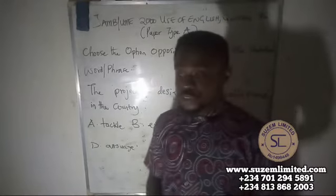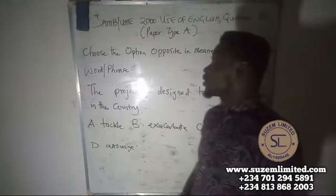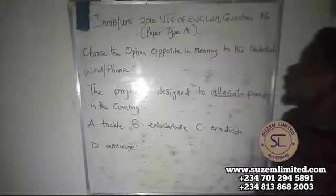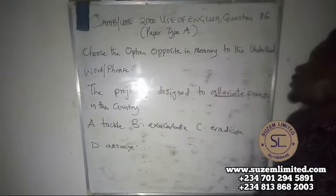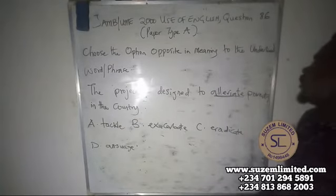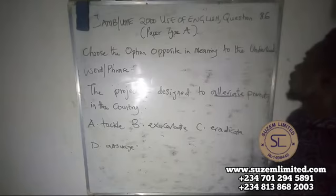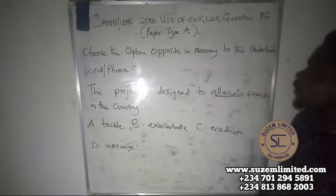You are welcome to SUSEM Academy. Today we are going to take a look at JAMB/UME 2000 Years of English, question 86, paper type A.